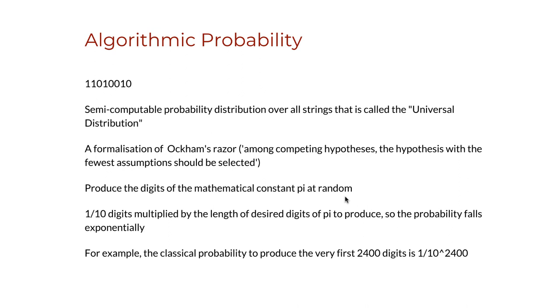The notion behind algorithmic probability is very intuitive, powerful, and even elegant. For example, if one wished to produce the digits of the mathematical constant pi at random, one would have to try time after time until one managed to hit upon the first numbers corresponding to an initial segment of the decimal expansion of pi.